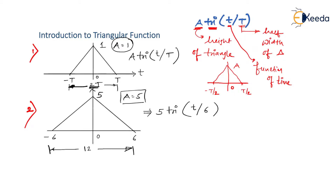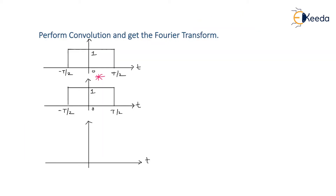Why have we learned this triangular function? We require it in case of a Fourier transform. Here I have to perform a convolution and get the respective Fourier transform. I have to convolve two signals: let x₁(t) and x₂(t) be the two signals. After convolving, I get some output y(t). Note that x₁(t) and x₂(t) are gate functions with equal widths. Whenever we convolve two rectangular functions of equal width, it gives a triangle; convolving two of unequal width gives a trapezoid.